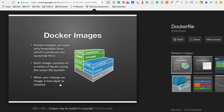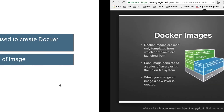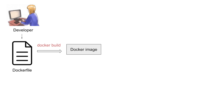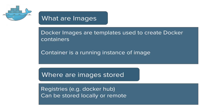When you change an image, a new layer is created. In real world, a developer will create a Dockerfile, which is a text file having instructions to create a Docker image. When we build this file by the command 'docker build', we get a Docker image. This Docker image can further be used to create a Docker container by the command 'docker run'.